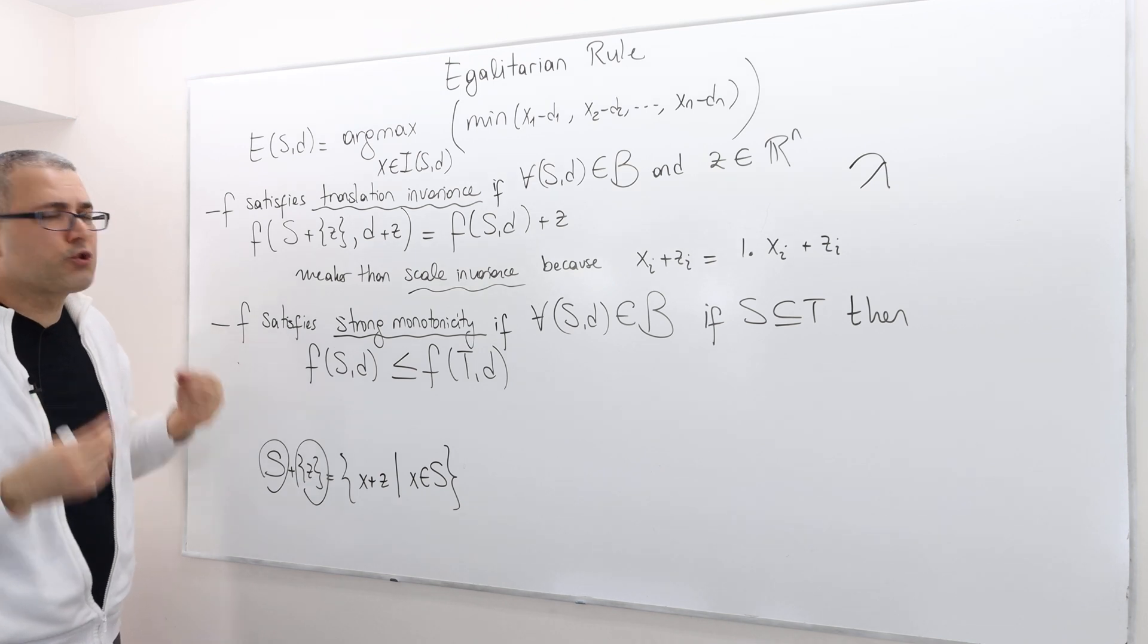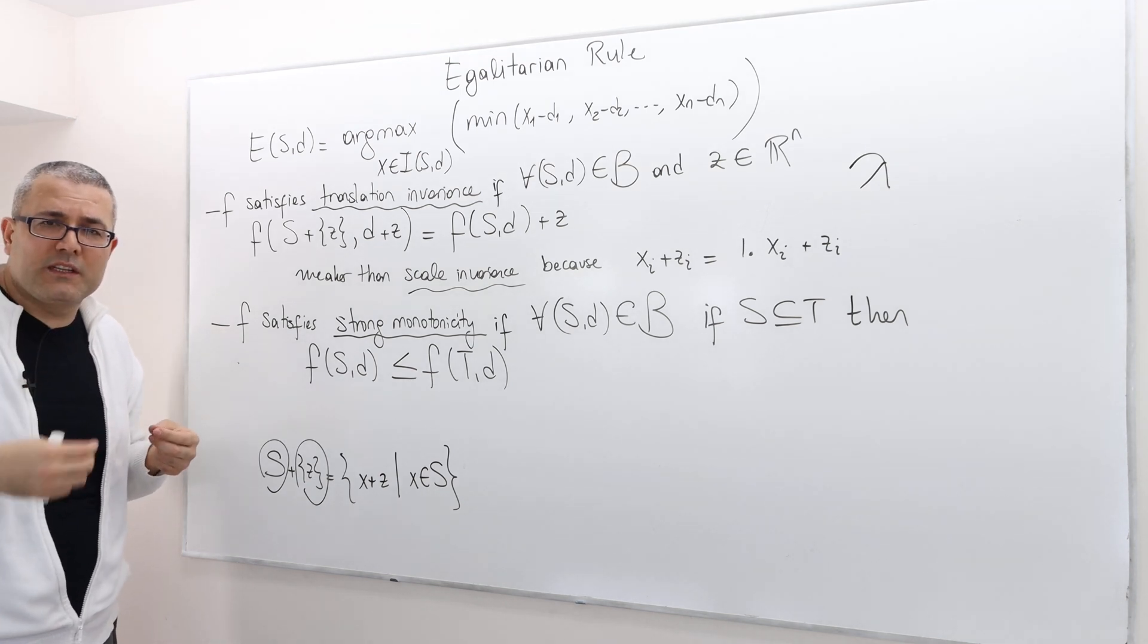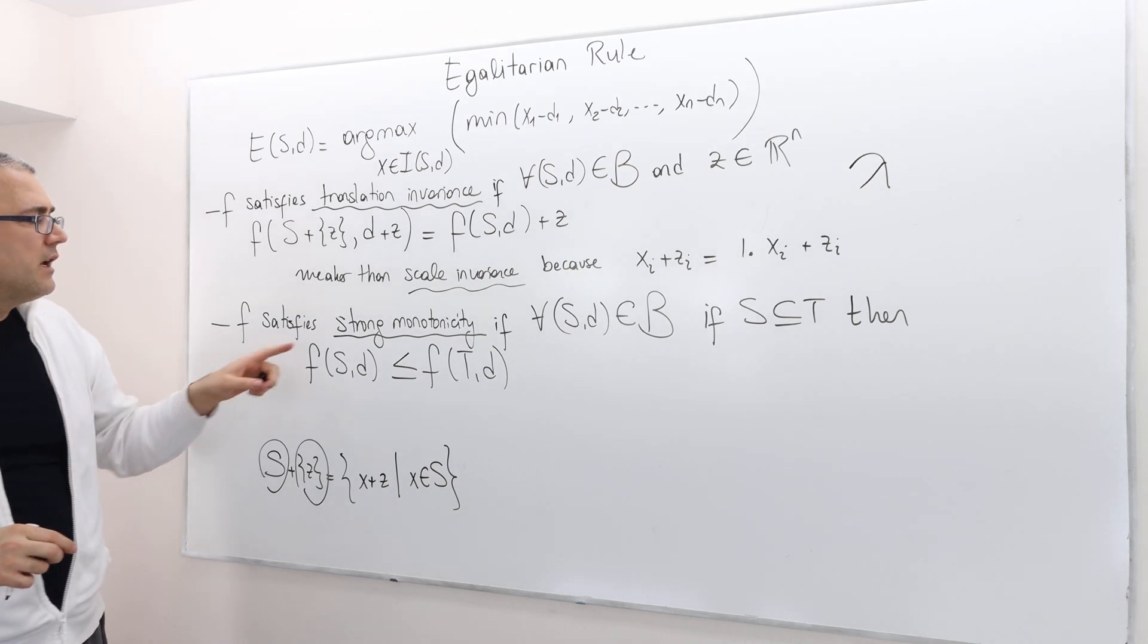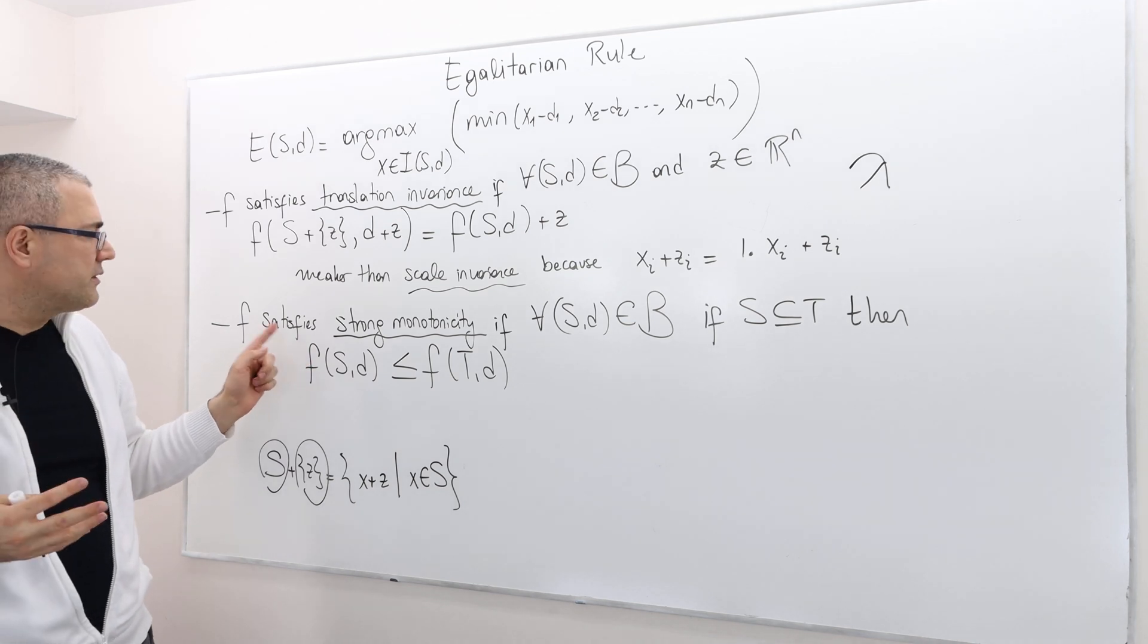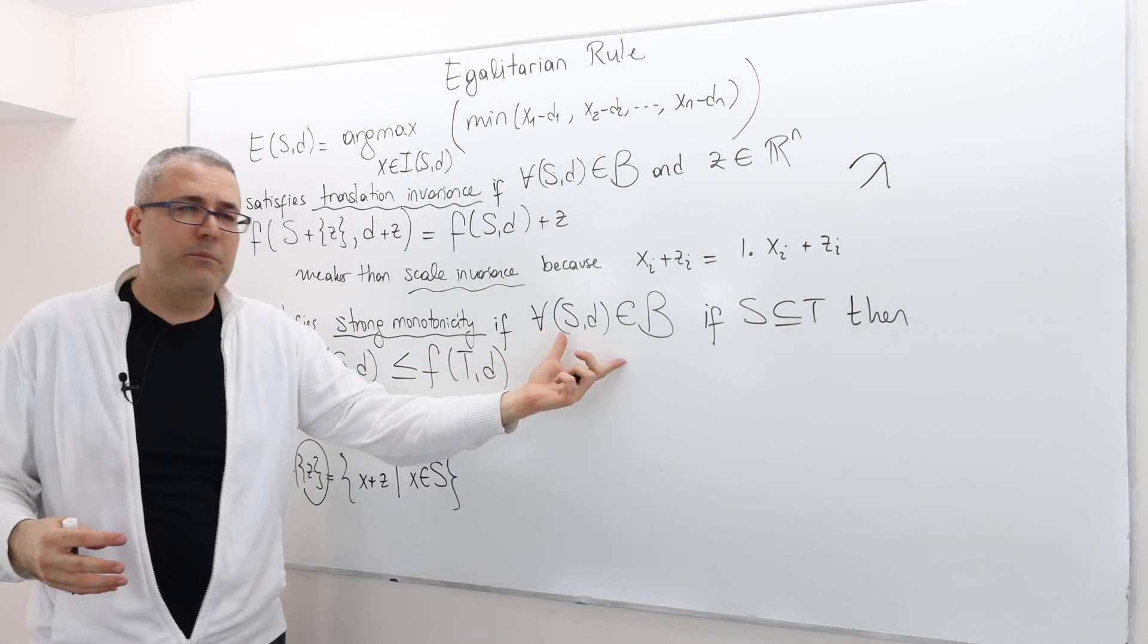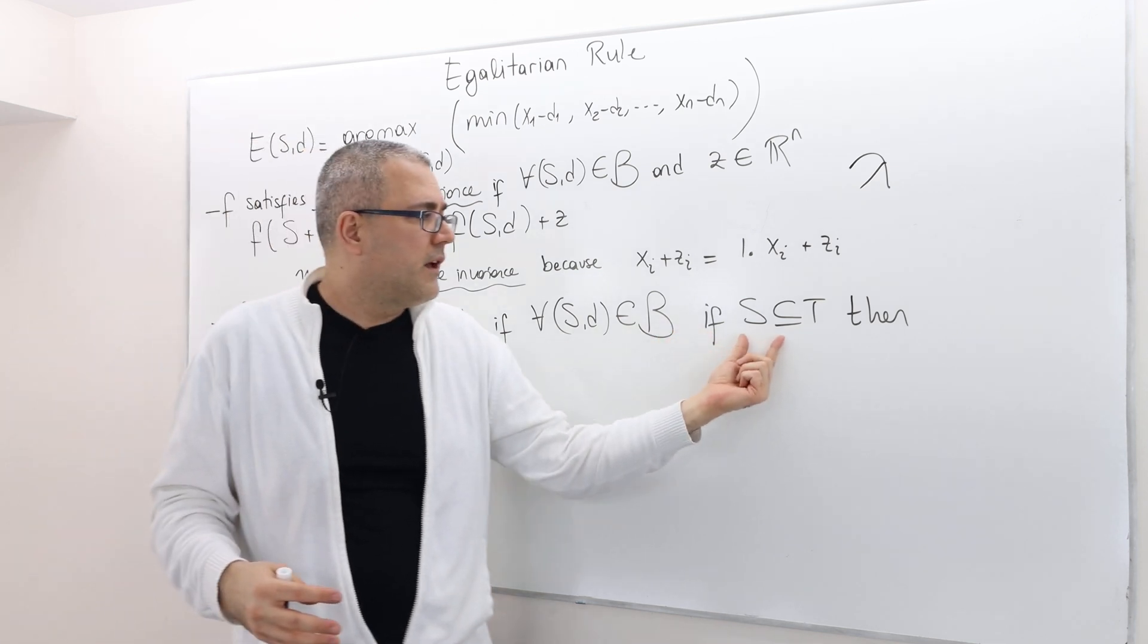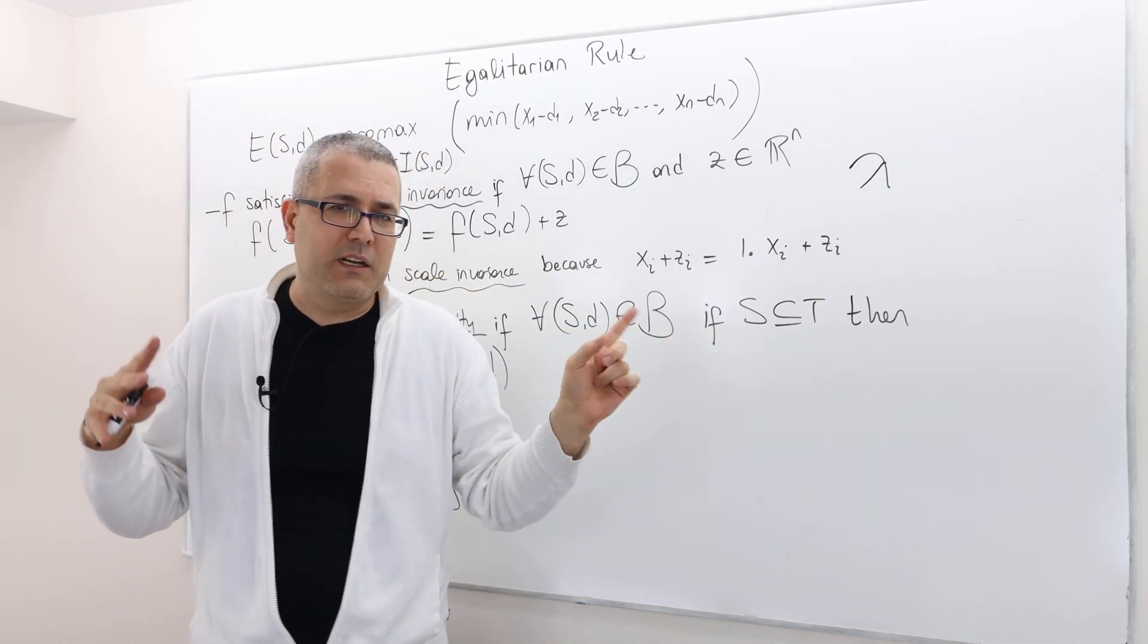The second assumption, strong monotonicity, is stronger than individual monotonicity. If the bargaining rule satisfies strong monotonicity, and if for every bargaining problem T is a larger bargaining set...